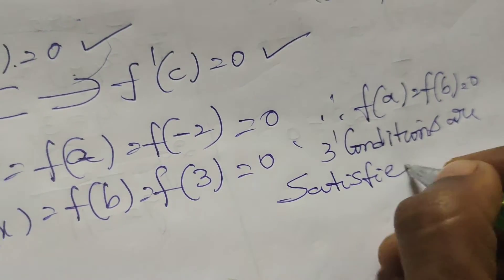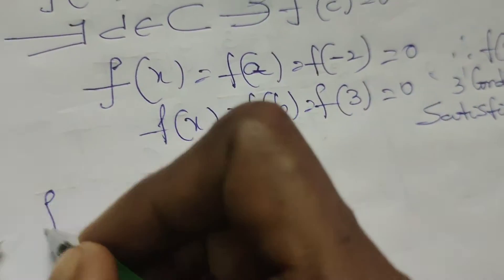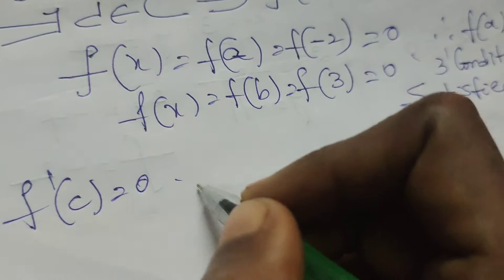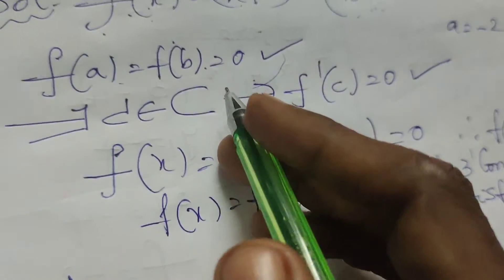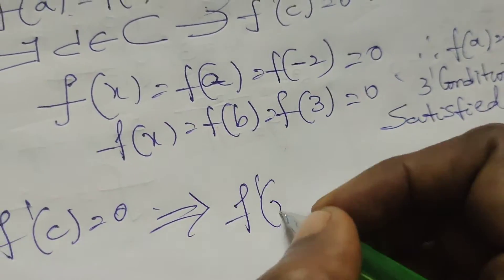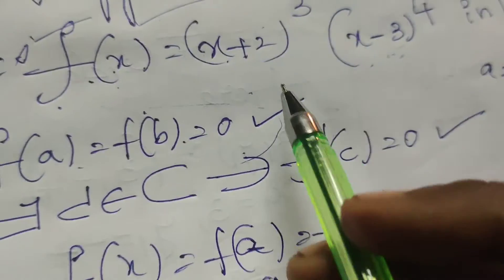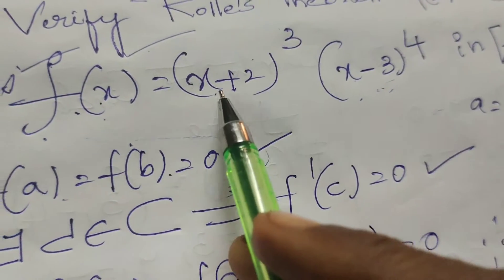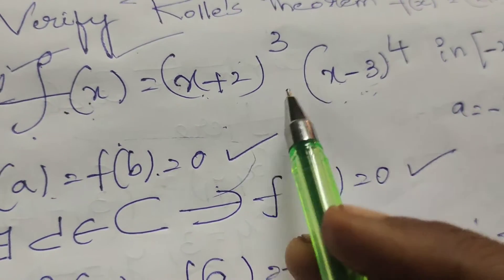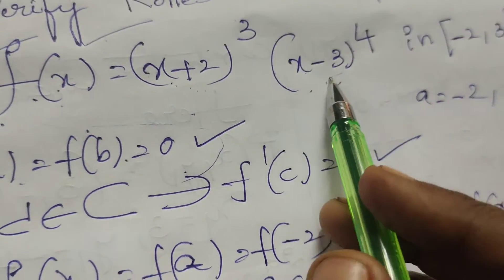Now we verify f'(c) = 0. We differentiate the given function once. Since there are two terms, we apply the product rule formula: d/dx(u·v) = u·v' + v·u'.